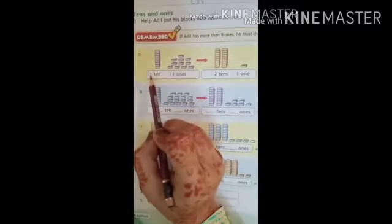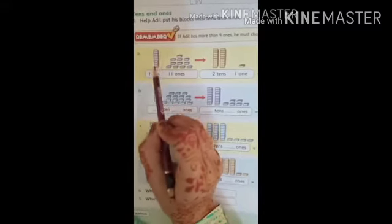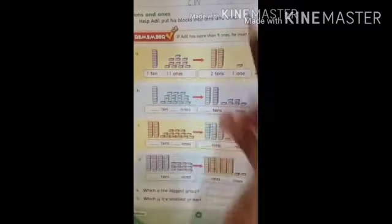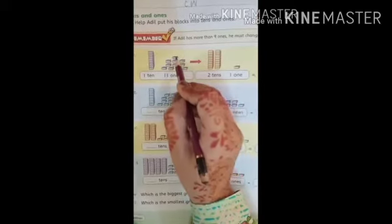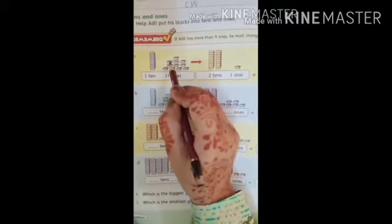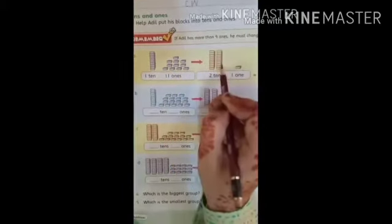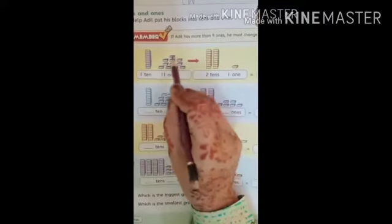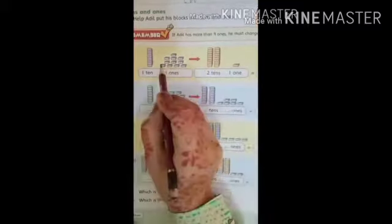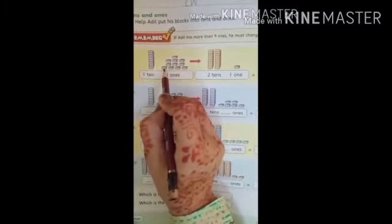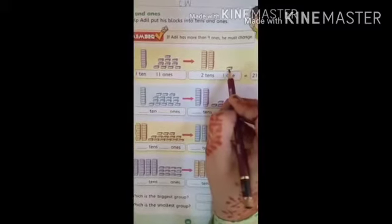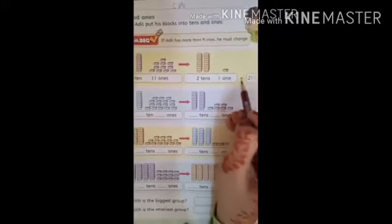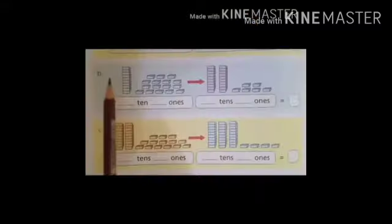Look at part A. One ten. There is one ten and eleven ones. Count: one, two, three, four, five, six, seven, eight, nine, ten. Ab isme se ten blocks ko hum separate kar denge. One ten ban jayega. Aur humari paas ab one remaining hai. Now, two tens and one is equal to twenty-one.